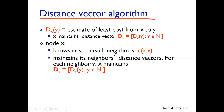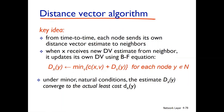At the same time, node x maintains its neighbor's distance vector data. For each neighbor v, x maintains dv — that is, the distance vector from v, including dv to y, representing v's estimated least cost to every other node y.